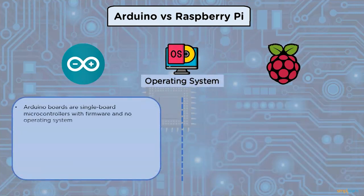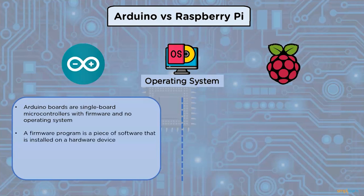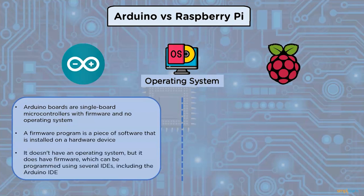Regarding operating system: Arduino boards are single-board microcontrollers with firmware and no operating system. A firmware program is a piece of software installed on a hardware device. Arduino doesn't have an operating system, but it does have firmware which can be programmed using several IDEs, including the Arduino IDE.